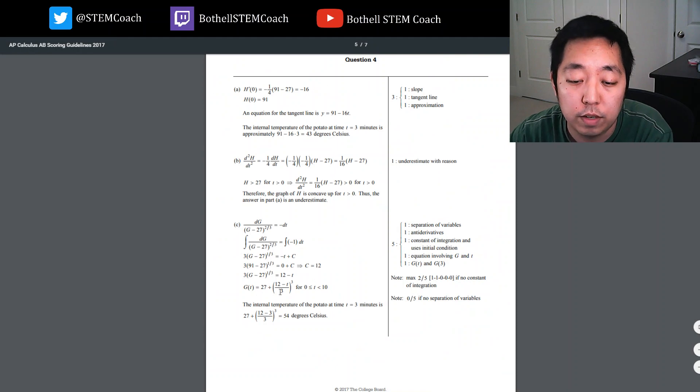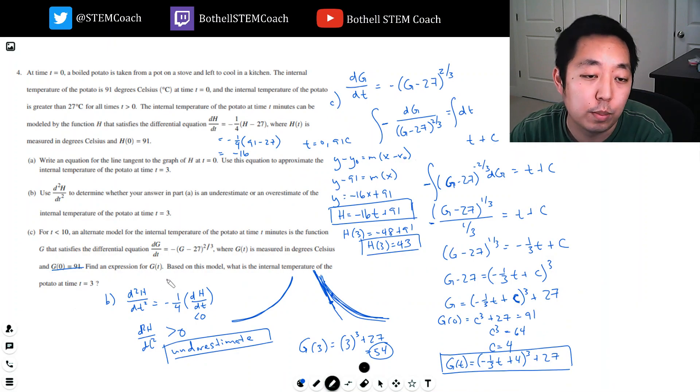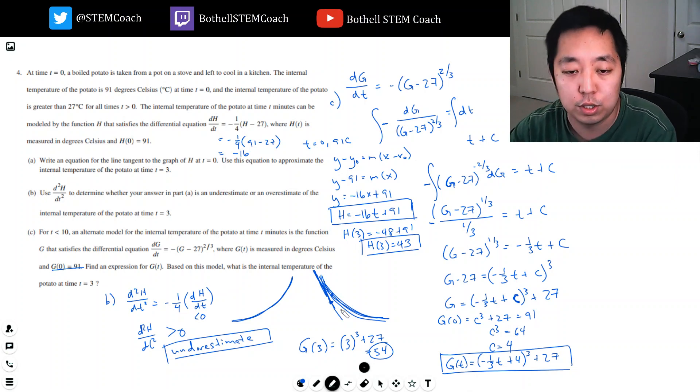Looking at the scoring guidelines: for part A, 91 minus 16t. Underestimate because the second derivative is positive, so it's concave up. For part C, I didn't answer the question initially—what is the internal temperature at time t equals three. I should have plugged in three. I didn't read about answering the second part of the question. I hope you guys enjoyed that. Thanks for watching. Please leave a comment, like, or subscribe. I will see you guys in the next one for free response question number five. Thanks.